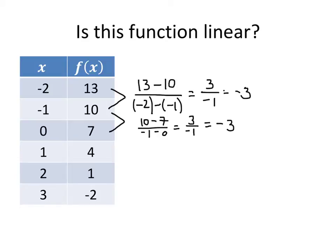Now those two rates of change are the same, but we still aren't quite convinced that this function is linear over the entire domain that we're looking at. So we really need to compute all of the different rates of change between all of these pairs of points. Our next rate of change is 7 minus 4 divided by 0 minus 1, and that gives us 3 divided by negative 1, which is negative 3.